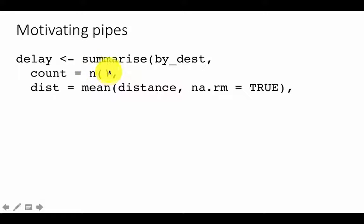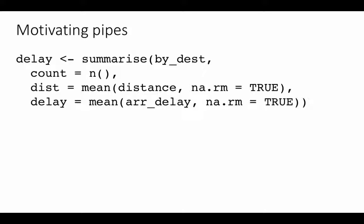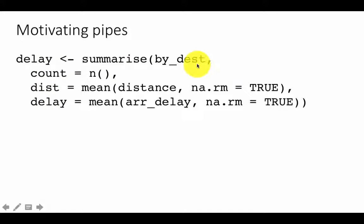We can say count equals n() — that notation tells you how many elements were in each group. We are also saying distance equals mean of distance, so for every destination we find how many flights are going there and calculate the mean distance to each destination. We are also calculating the mean arrival delay, and again since we are calculating the mean we have to set na.rm equals TRUE. So we are creating three different summaries for every destination.